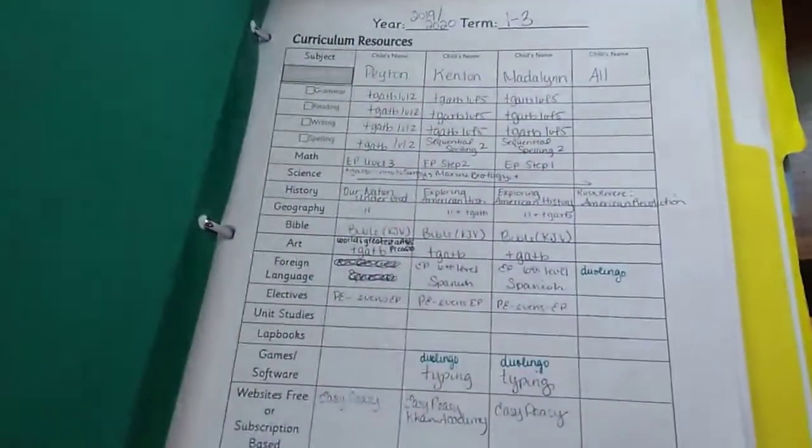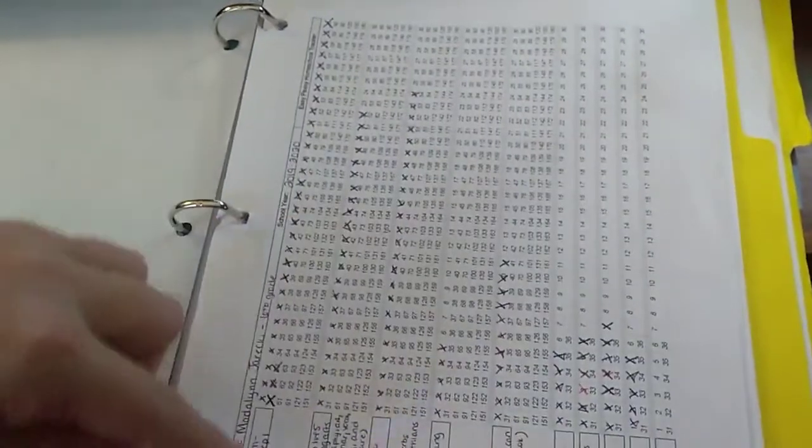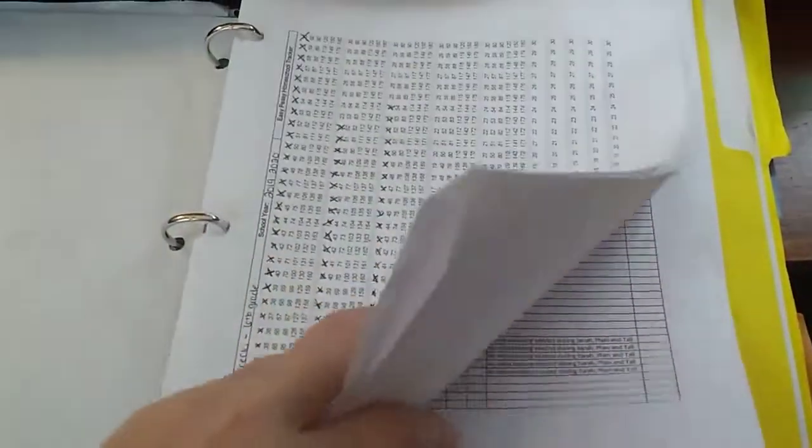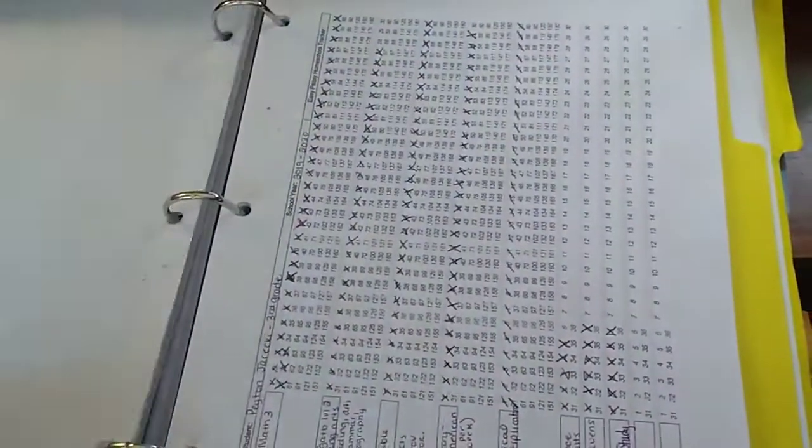The next tab is lesson plans. Whenever I finish my lesson plans, I stick the finished ones in this pocket. I have curriculum resources and checklists for my kids, and then we have our lesson plans.